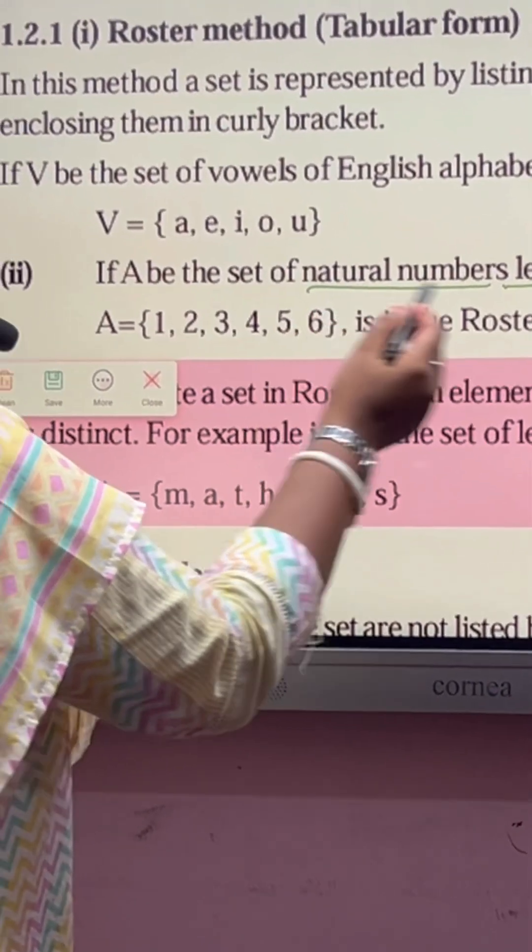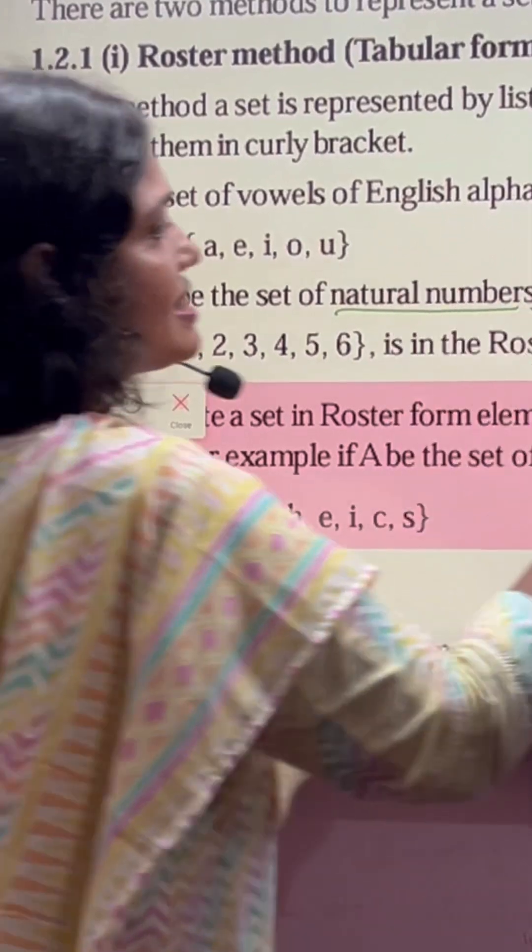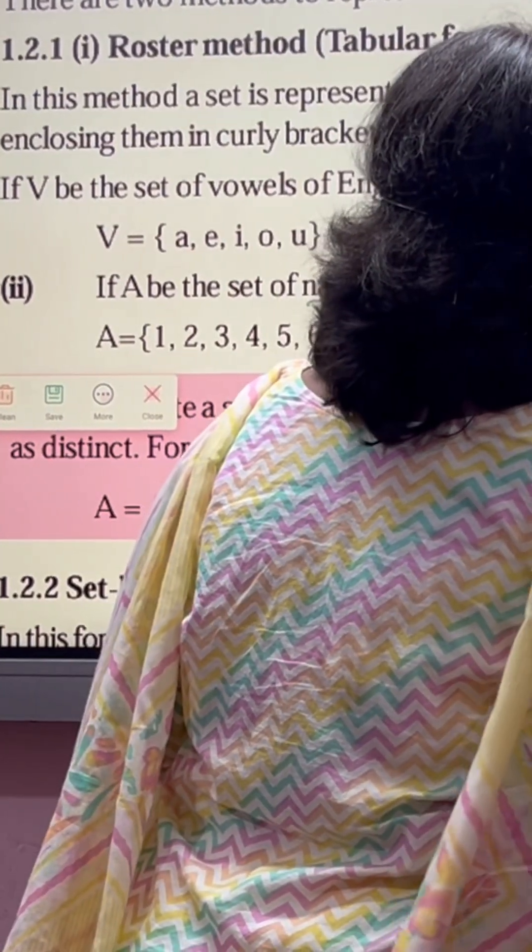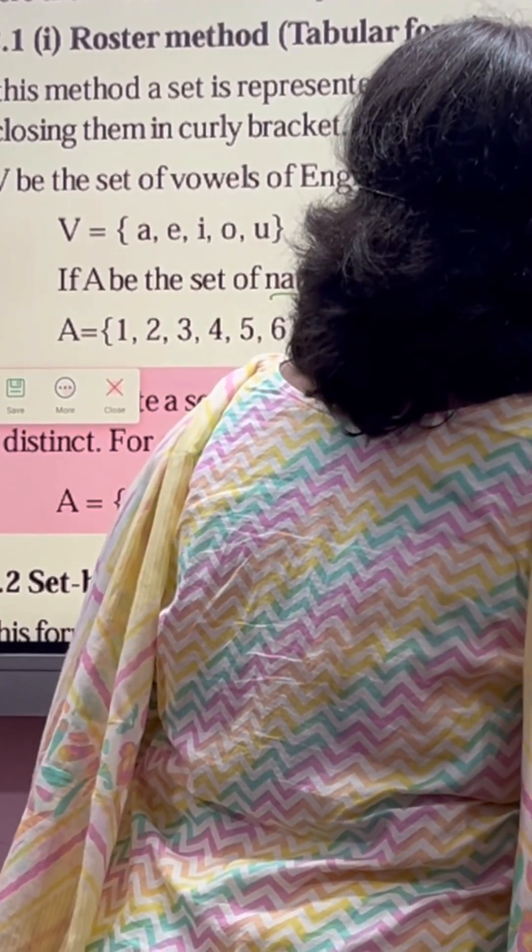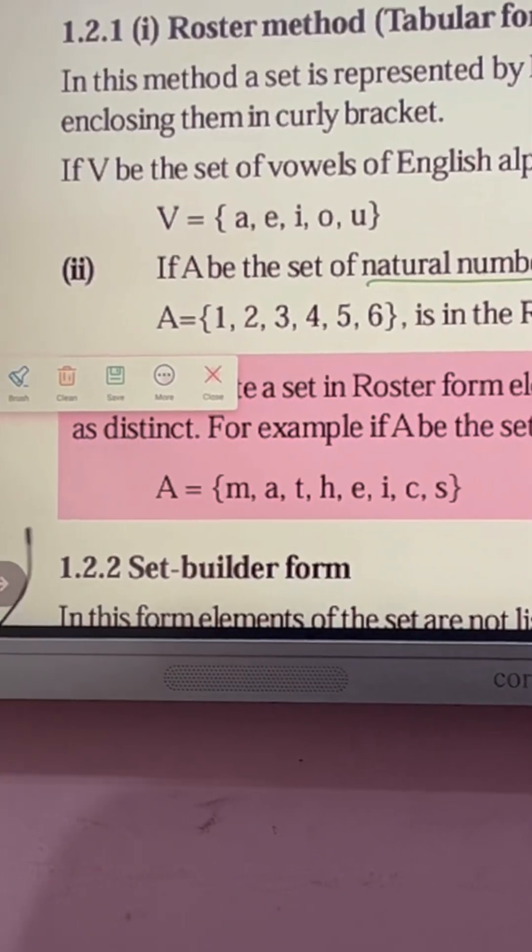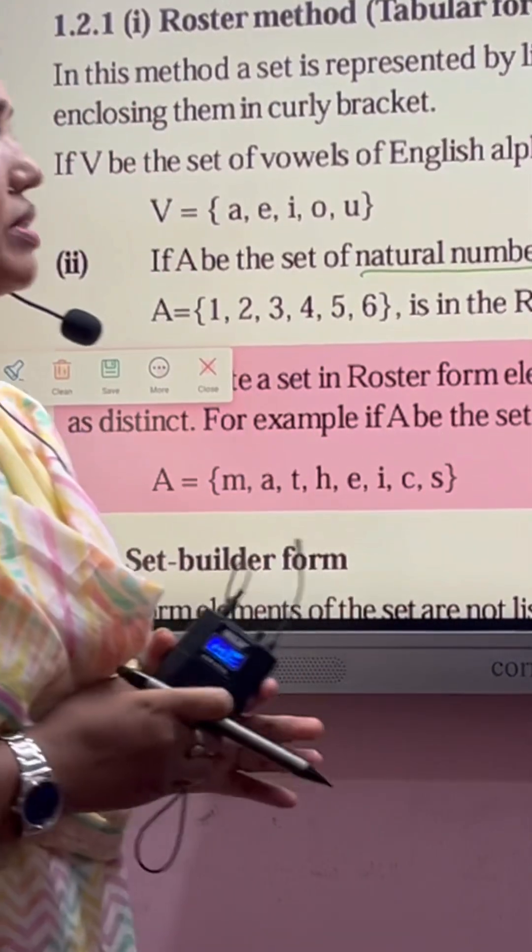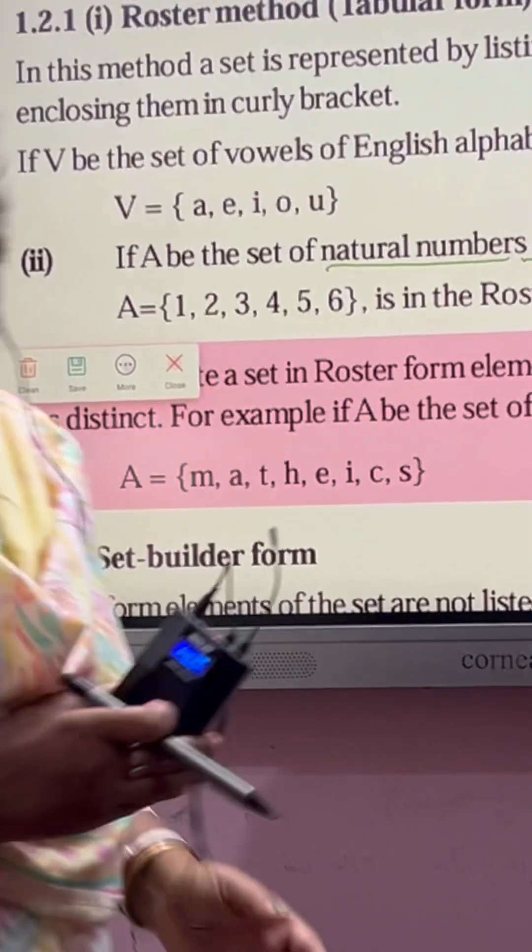So you have to write only the numbers less than seven. That means four, five, six, up to six. It is less than seven. So how many numbers do we have? Six numbers.